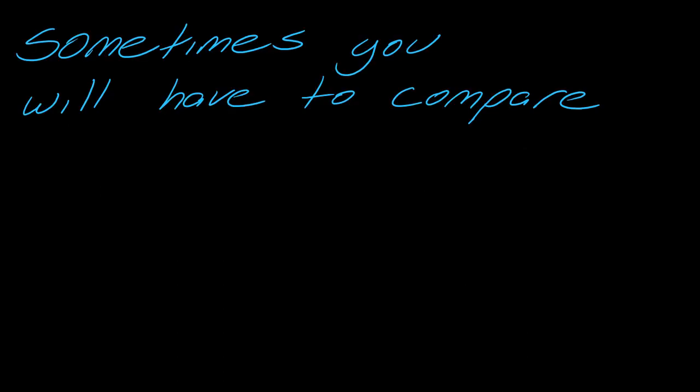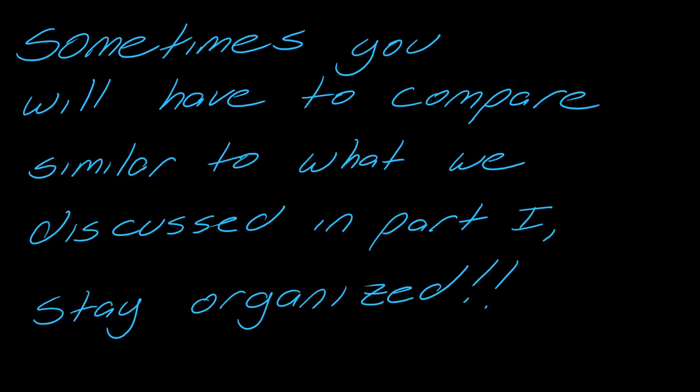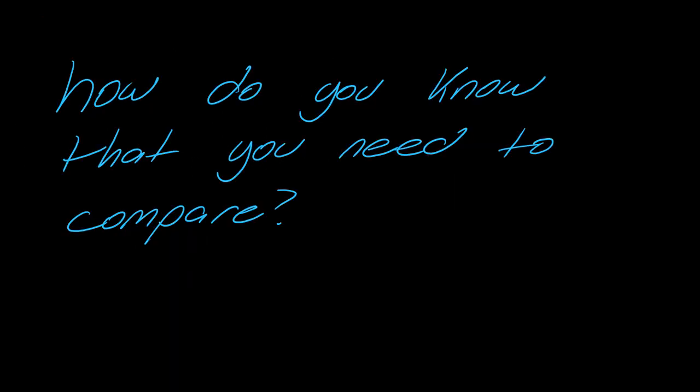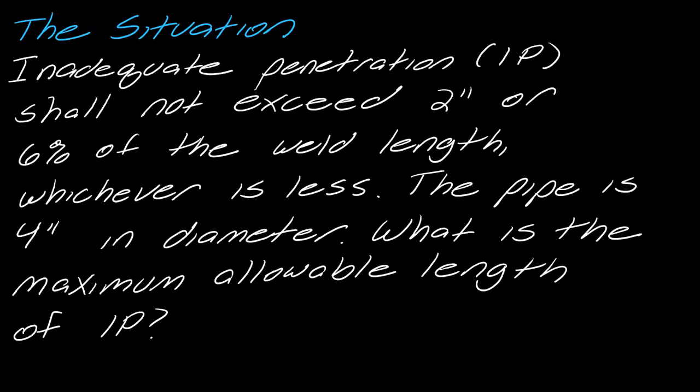Sometimes you will have to compare values, similar to what we discussed in part one. We're moving into comparison problems. First example: inadequate penetration (IP) shall not exceed two inches or six percent of the weld length, whichever is less. The pipe is four inches in diameter. What is the maximum allowable length of IP? Notice the phrase 'whichever is less' — that signals a comparison.